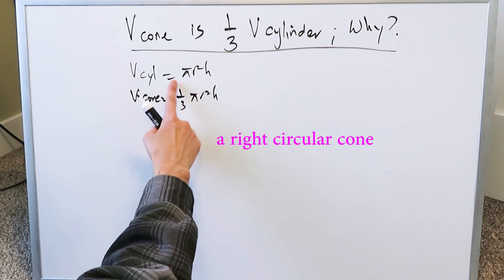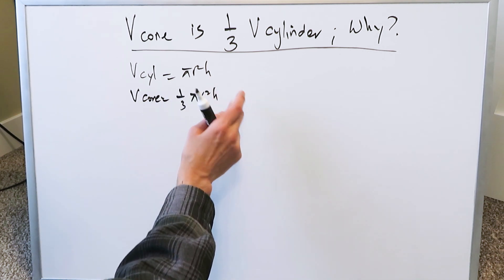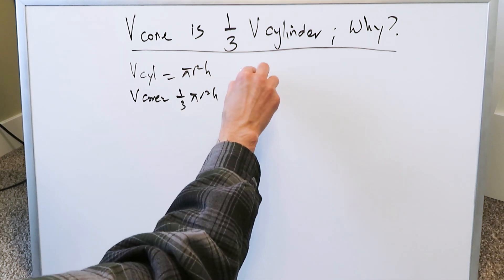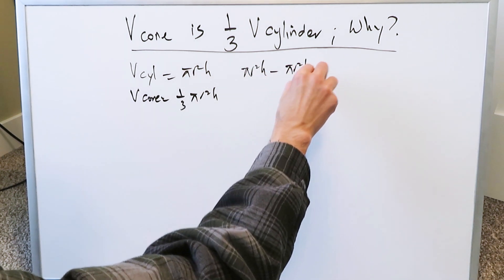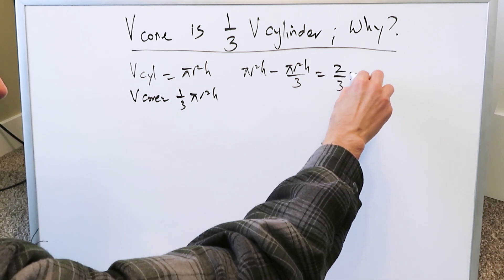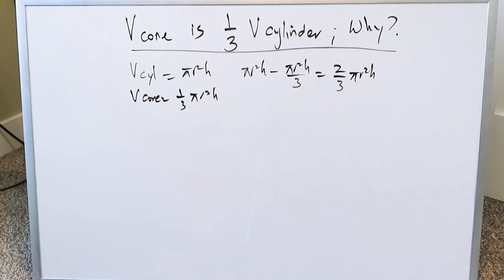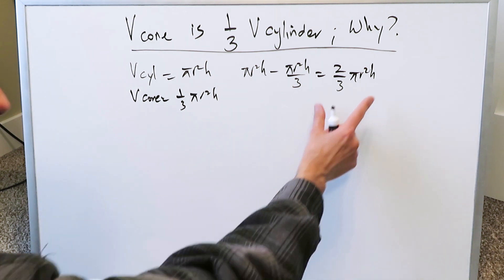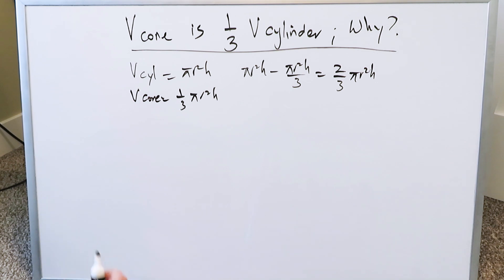The cone volume is smaller. If you do the difference of the two: πr²h minus (πr²h)/3, you have a difference of (2/3)πr²h. The volume of a cylinder is (2/3)πr²h units cubed larger than that of a cone. And why is that the case?